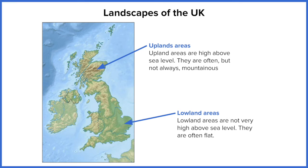In contrast, we've got our lowland areas. These are the lighter greens which we can see on the east coast. Lowland areas are very close to sea level, generally quite flat, and they're the opposite in terms of location to the upland areas. They tend to be on the east coast and particularly in the south.